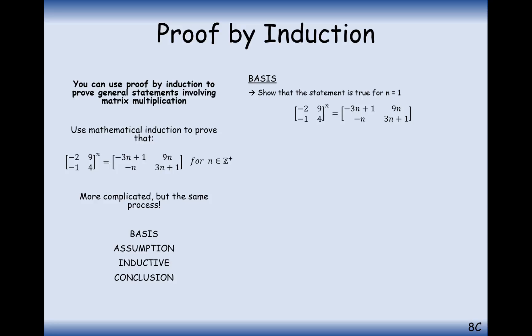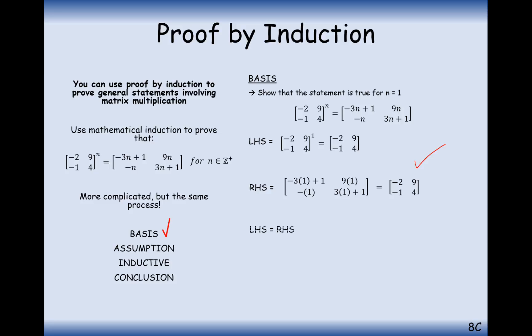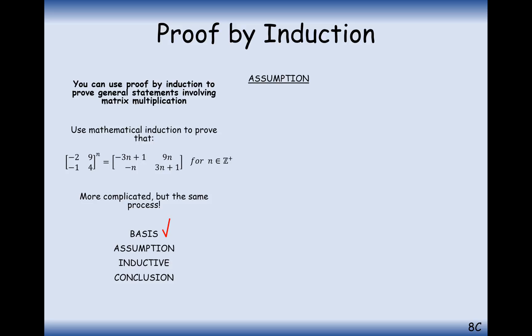Base step: prove true for n=1. The left-hand side gives (−2, 9; −1, 4). The right-hand side, substituting n=1, also gives (−2, 9; −1, 4). Left-hand side equals right-hand side — these two are the same — so we've proven our theorem true for n=1.